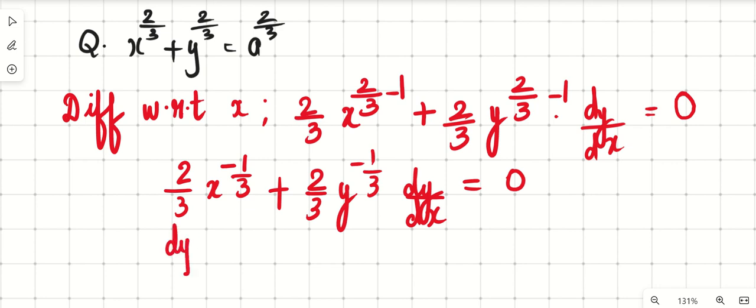From here dy by dx is minus 2 by 3 x raised to 2 by 3 y raised to minus 1 by 3 dy by dx is equal to.